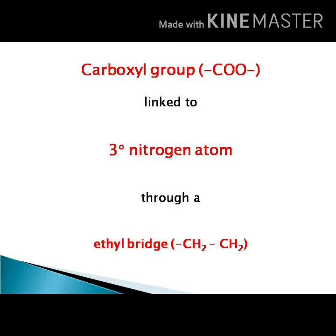Now we will see the similarities and differences between procaine and benzocaine. The carboxylic acid part is the same for both — para-aminobenzoic acid. In procaine, that acid part is connected to a tertiary amine group through an ethyl linkage. Whereas in benzocaine, there is no tertiary nitrogen atom — it is a simple ester of ethanol and para-aminobenzoic acid. Procaine contains a tertiary nitrogen atom, connected to the carbonyl group through a CH2-CH2 ethylene bridge.